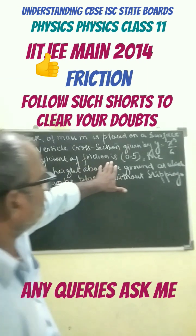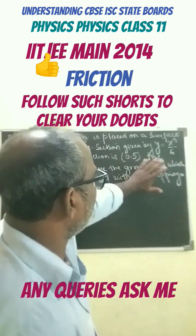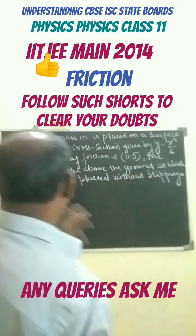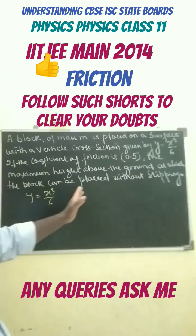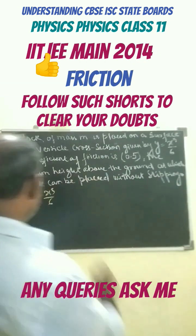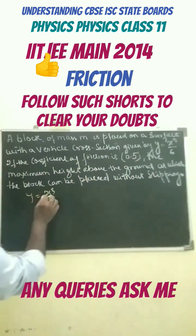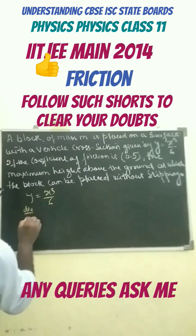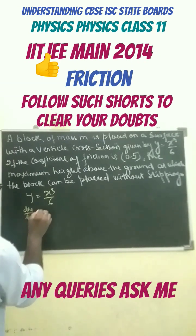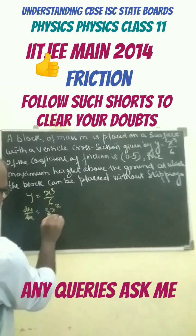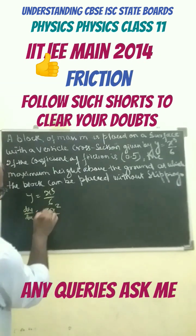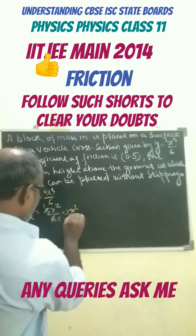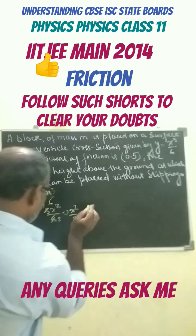Now if the coefficient of friction is 0.5, we need to find the maximum height above the ground at which the block can be placed without slipping. We can find dy by dx, which equals 3x squared by 6, that is x squared by 2.